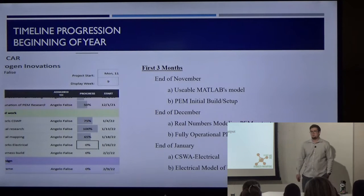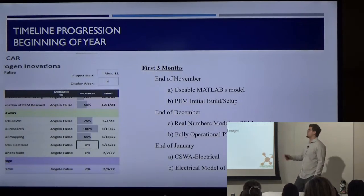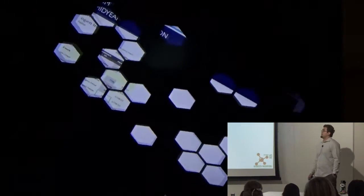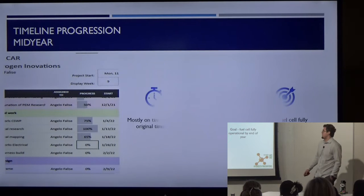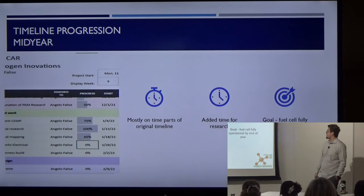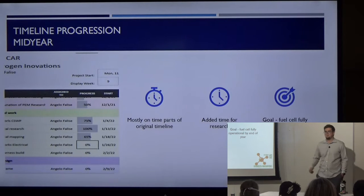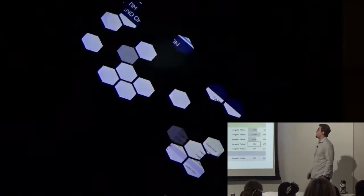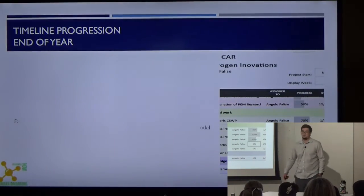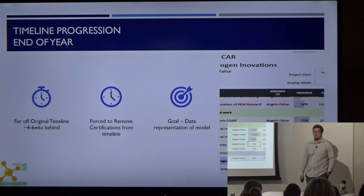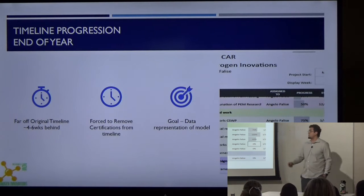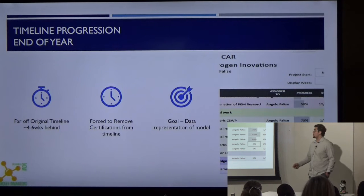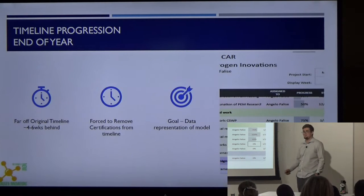By the end of January, I wanted to have a full electrical model and be CSWA Electrical Certified. Mid-year, I thought I was kind of on time. I moved my research and MATLAB all the way to the end of the year. Extended my research so I had time to fully achieve an operational fuel cell. By the end of the year, let's say I'm four to six weeks behind. Give me another four weeks, I bet I can have a rolling model of my car. I removed certifications from my timeline to make sure I had proper representation of my car and data.